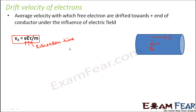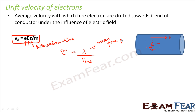How do we calculate relaxation time? Relaxation time tau (τ) is equal to lambda divided by V_rms, where lambda refers to the mean free path of electrons and V_rms refers to the root mean square velocity of electrons.